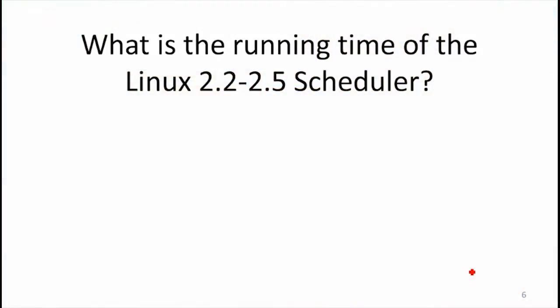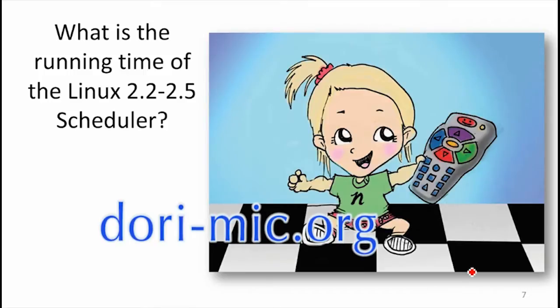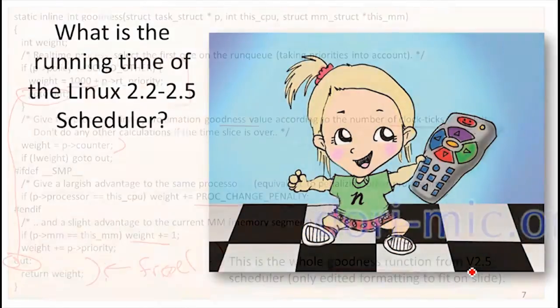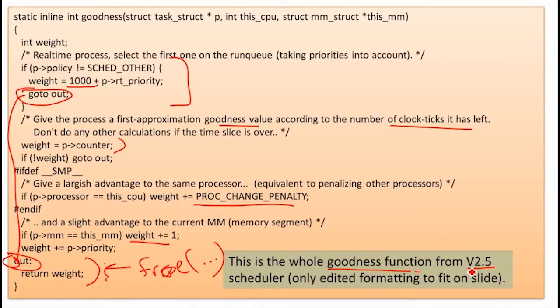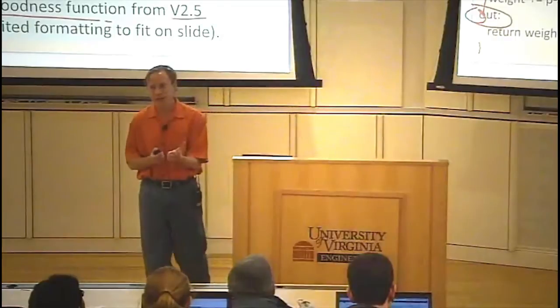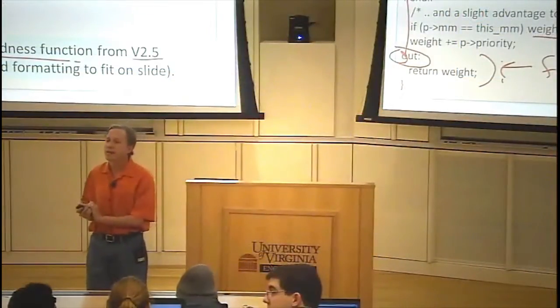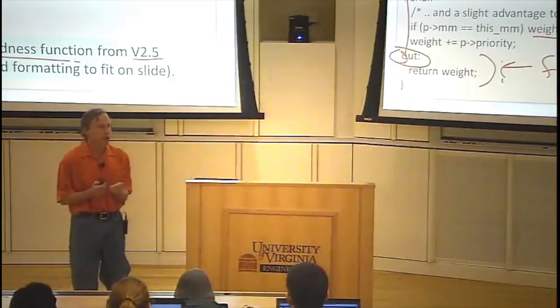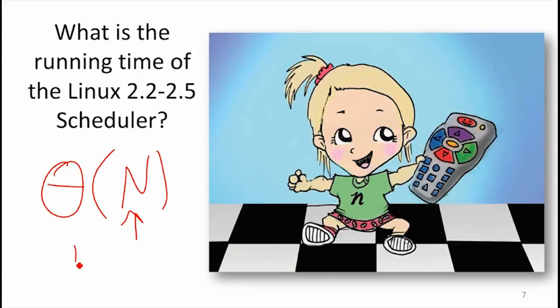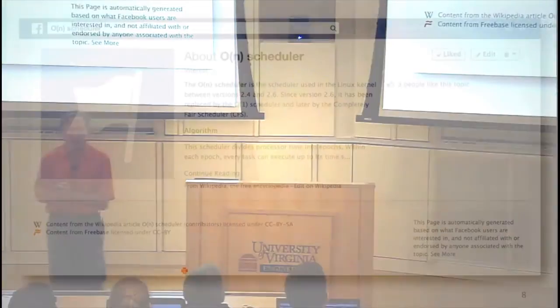What's the running time of the scheduler? Which process do we have to compute the goodness function for? Every process. The whole point of it is we're checking every process, at least every process that's ready to run, figuring out what its goodness value is, and picking the best one. So what's the running time? The running time is linear in the number of processes. It's theta n, where n is the number of processes. That's what it was actually called. They called it the big O n scheduler. It really should have been the theta n scheduler, but big O n is still correct.